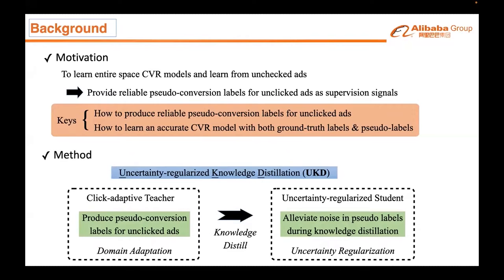In this paper, we propose Uncertainty Regularized Knowledge Distillation, UKD, which aims to debias CVR estimation via distilling knowledge from unclicked impressions. UKD's overall workflow contains a click-adaptive teacher that produces pseudo-conversion labels for unclicked impressions, and an uncertainty-regularized student model that can effectively distill knowledge from unclicked impressions. Specifically, we propose to formulate pseudo-label generation as an unsupervised domain adaptation problem. Then the student performs uncertainty estimation on pseudo-labels to alleviate the inherent noise in them.